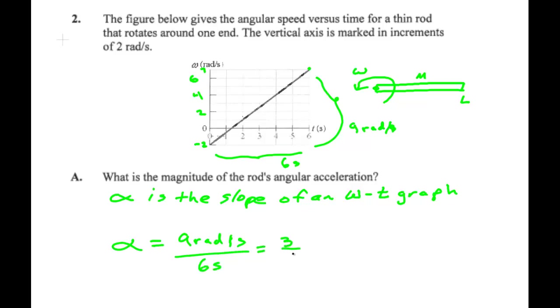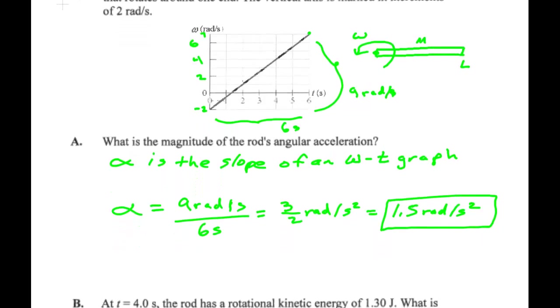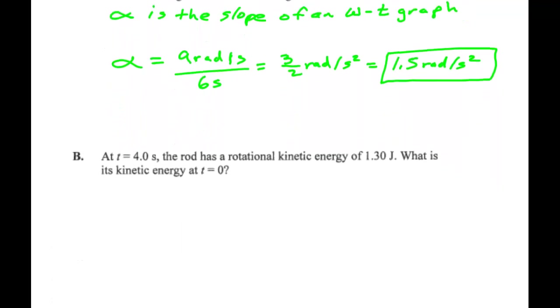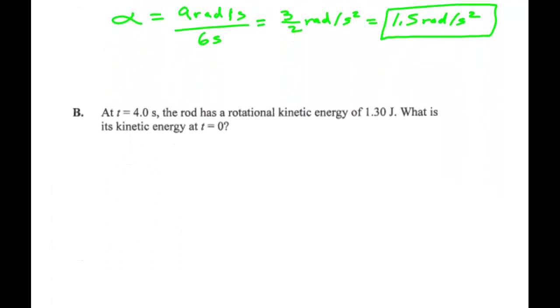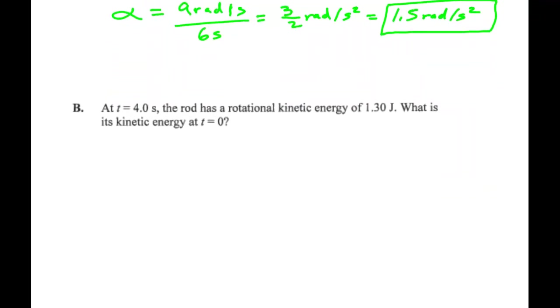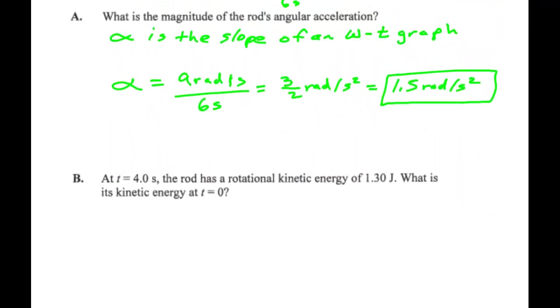Which is 3 halves of a rad per second squared or 1.5 radians per second squared. That's alpha. So that was pretty simple. If I know I, of course, I could calculate the net external torque that was involved by Newton's second law. Let's see what this is. It says at t equal 4 seconds the rod has a kinetic energy of 1.30 joules. What is its kinetic energy at t equal 0?